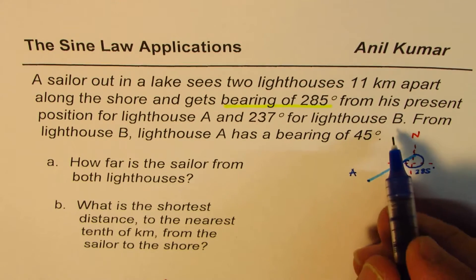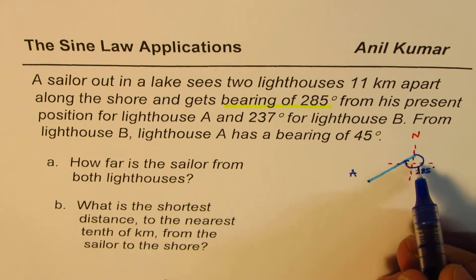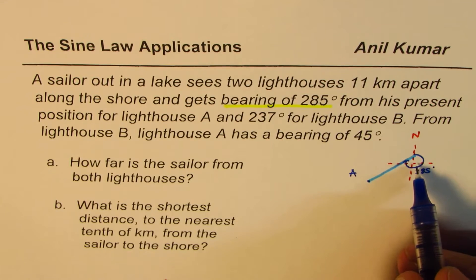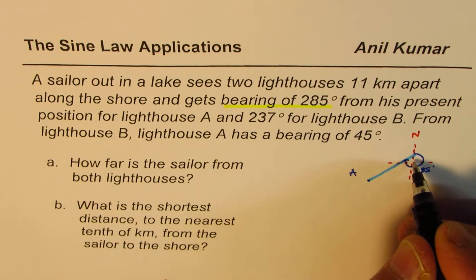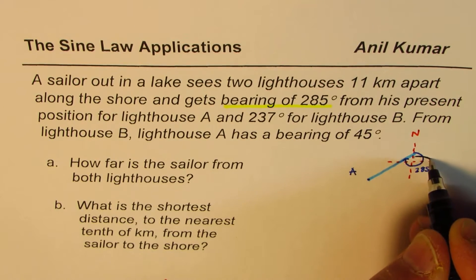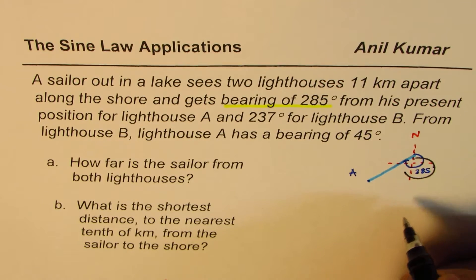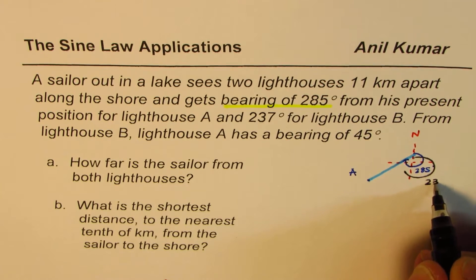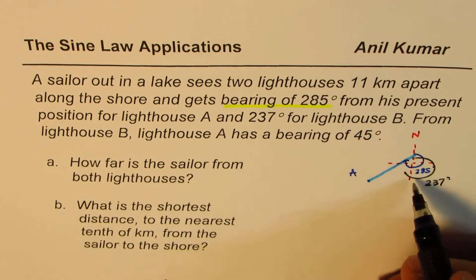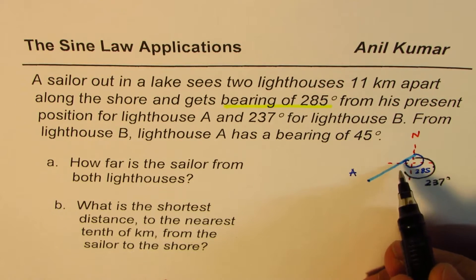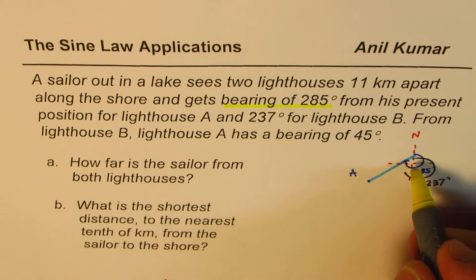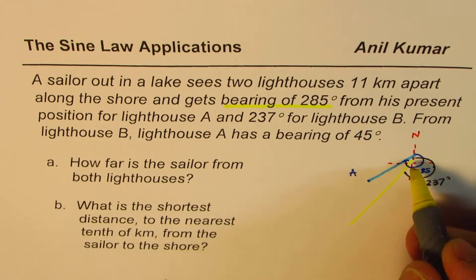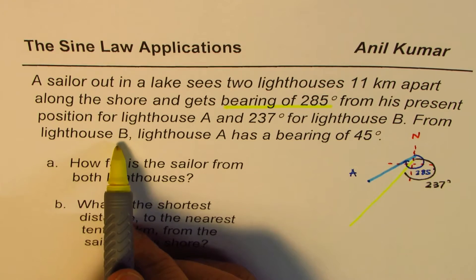237 will be more than 180 degrees. So somewhere along this line — more than 180 but less than 270 — somewhere along this line we have lighthouse B.